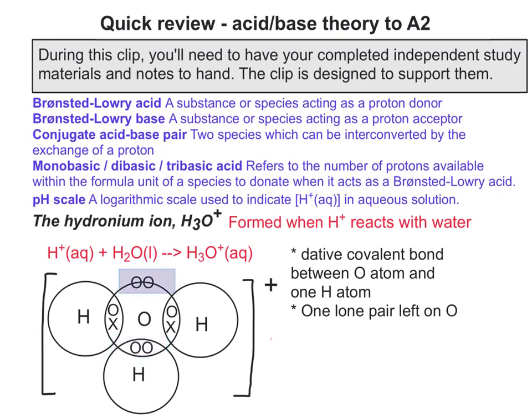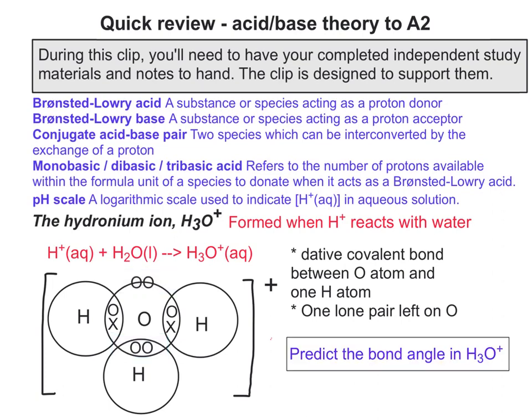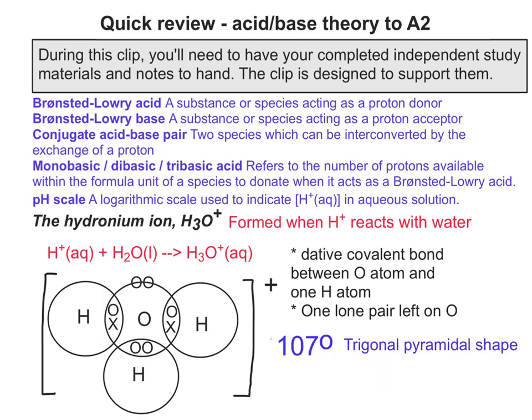Can you predict the bond angle in H3O+? With one lone pair on the central atom and three bond pairs, the electron pairs repel as much as possible, and the bond angle for least repulsion is 107 degrees, giving a trigonal pyramidal shape.